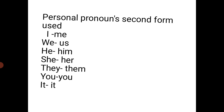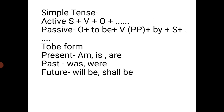One more important thing to keep in mind: for personal pronouns, when converting active to passive, we use the second form (objective form) of the personal pronoun. For example: I → me, we → us, he → him, she → her, they → them, you → you, and it → it. This is simple — keep this in mind.